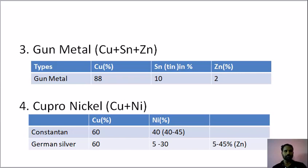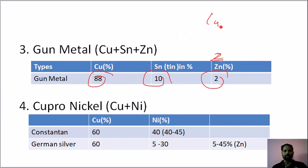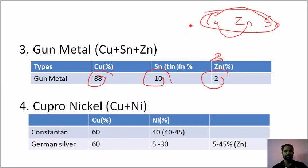Next, gunmetal. Gunmetal contains copper, zinc, tin, brass, and bronze. Copper plus nickel — constantan — electrical: 60% copper, 40% nickel.